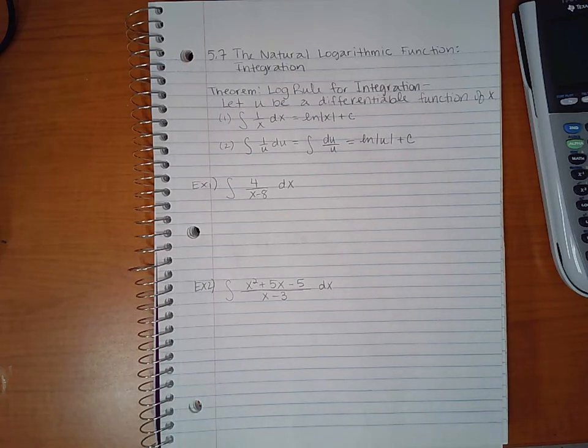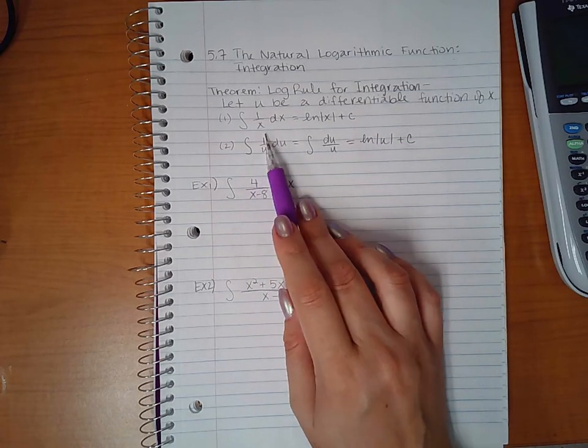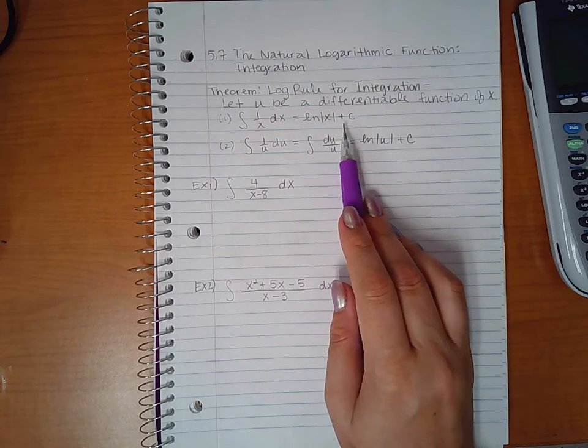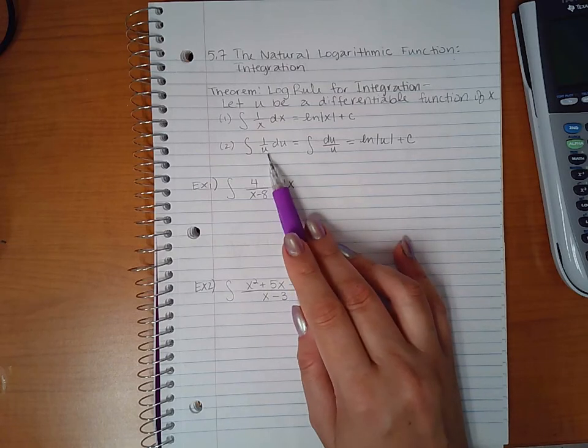This section is the natural logarithmic function integration. The theorem is the log rule for integration. Let u be a differentiable function of x, then the integral of 1 over x dx is ln of absolute value of x plus c. Or if you have 1 over u where u is a function of x.